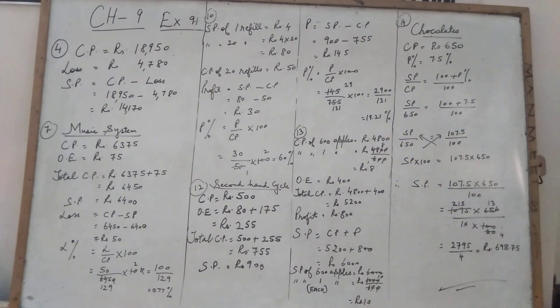We will put the formula, put values. Again it is not divisible. We will divide it. Then we will find the answer in decimal, 19.21 percentage. Now children, see the next one. 13th question from your book. A fruit vendor bought 600 apples for Rs. 4,800. He spent Rs. 400 on transportation. How much should he sell each to get the profit of Rs. 800?